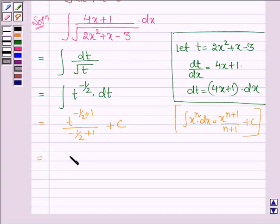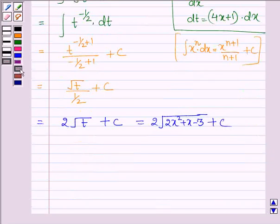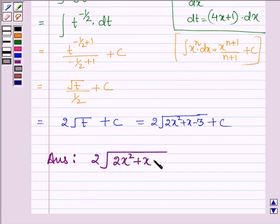Thus we have root over t upon 1 by 2 plus c, or we have 2 root t plus c. And t is 2x square plus x minus 3. Thus on integrating the given function we get the answer as 2 into root of 2x square plus x minus 3 plus c.